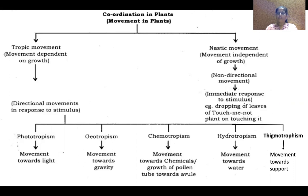Coordination in plants is everything related to growth. In plants, since coordination is required for growth, there are two types of movement. One is movement dependent on growth — plants move in response to a stimulus depending on growth. That is called tropic movement. Whereas nastic movement is nothing to do with growth. It is independent of growth; it is a non-directional movement.